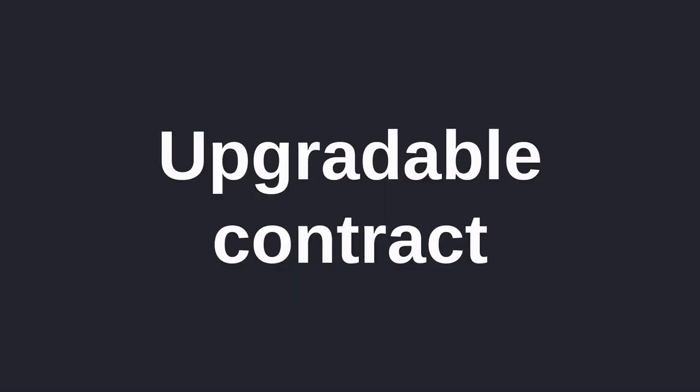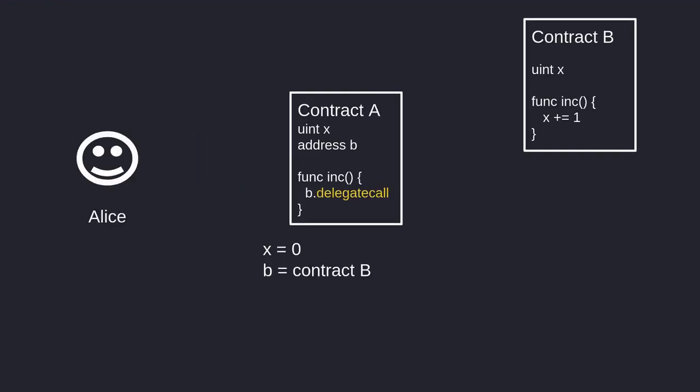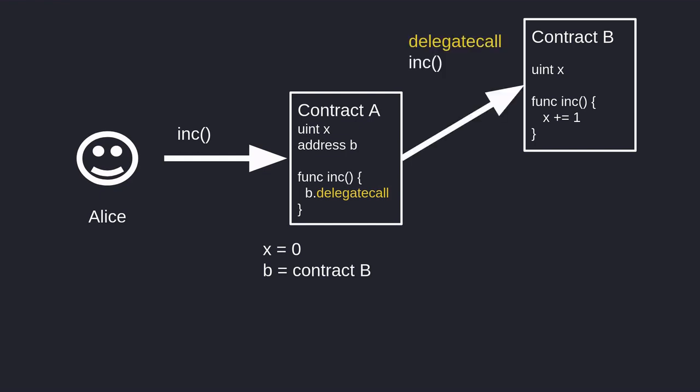So how is delegatecall useful? Using delegatecall you can write upgradable contracts. Suppose that Contract A and Contract B are already deployed on the blockchain, meaning you won't be able to change the code inside either contract. Inside Contract A we store two state variables: a uint named x and the address of Contract B. The function increment uses delegatecall to call Contract B. When Alice calls increment in Contract A, Contract A calls the increment function of Contract B using delegatecall, and the state variable of Contract A is updated.